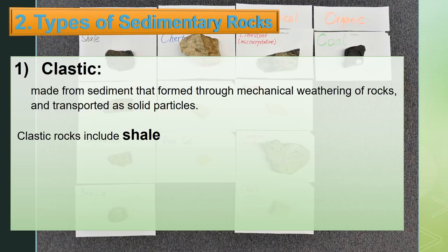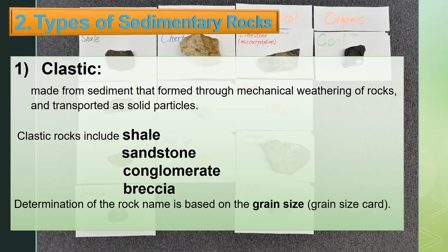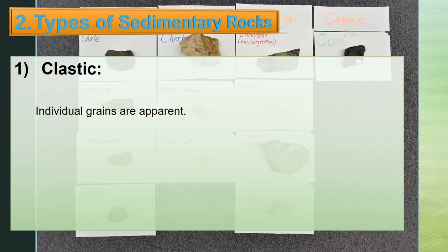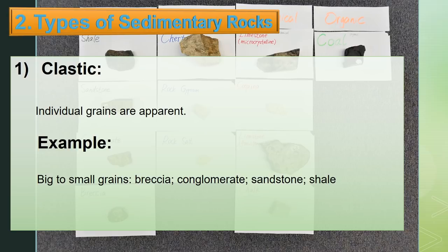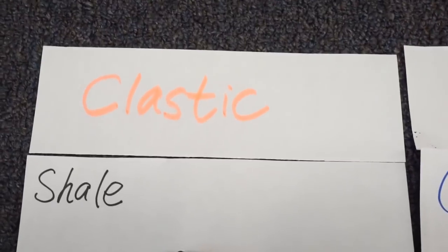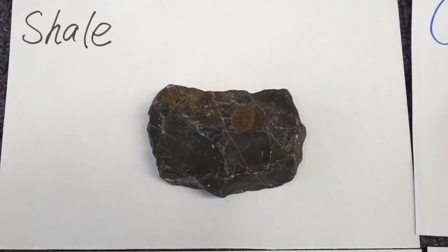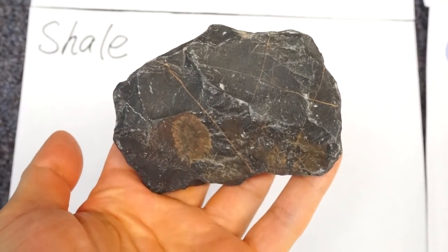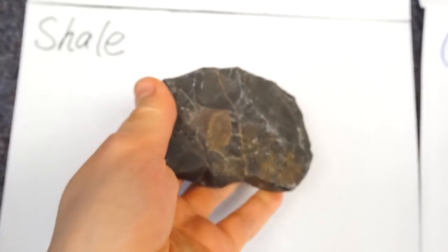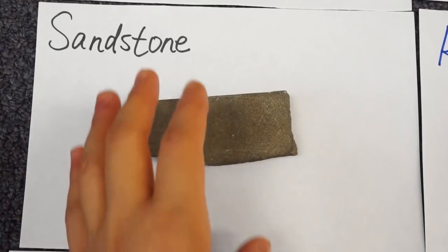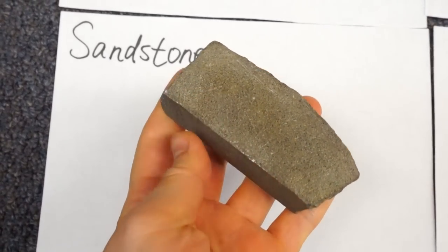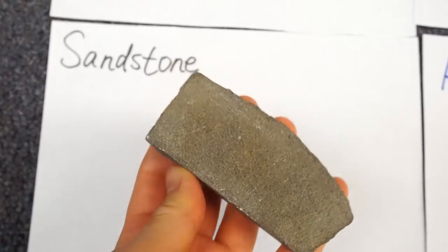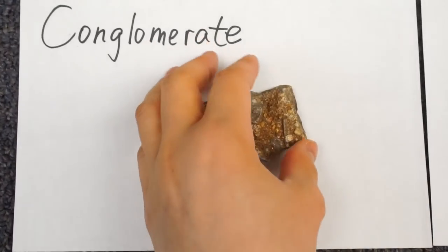Clastic rocks include shale, sandstone, conglomerate, and breccia. Determination of the rock name is based on grain size using a grain size card. Individual grains are apparent. From big to small grain size: breccia, conglomerate, sandstone, and shale. Shale has the smallest grains. With increasing grain size we have sandstone, then conglomerate.